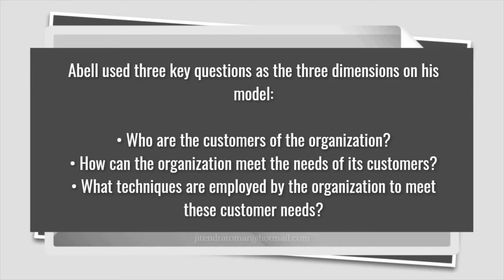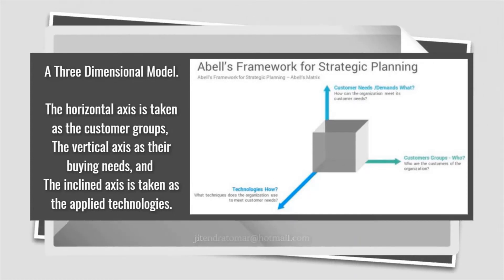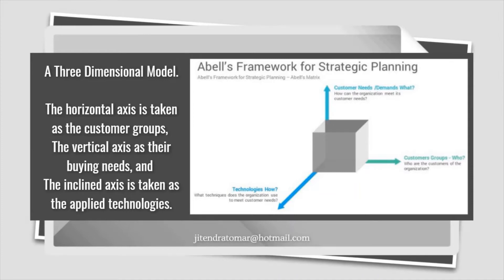What are the customers of the organization? How can the organization meet the needs of its customers? What techniques are employed by the organization to meet these customer needs? When plotted on a three-dimensional model, the horizontal axis is taken as the customer groups, the vertical axis as their buying needs, and the inclined axis is taken as the applied technologies. Taken together, a summarized version of the organization's business model can be viewed in one glance.